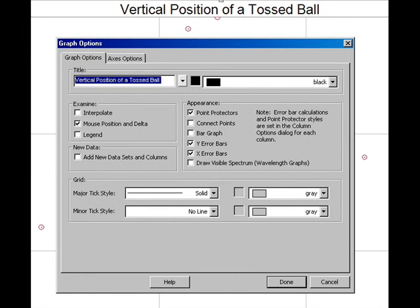and the motion detector detected the position of a tiny miniature basketball thrown vertically into the air, I have chosen the following title: Vertical Position of a Tossed Ball. The title is entered on the Graph Options menu.